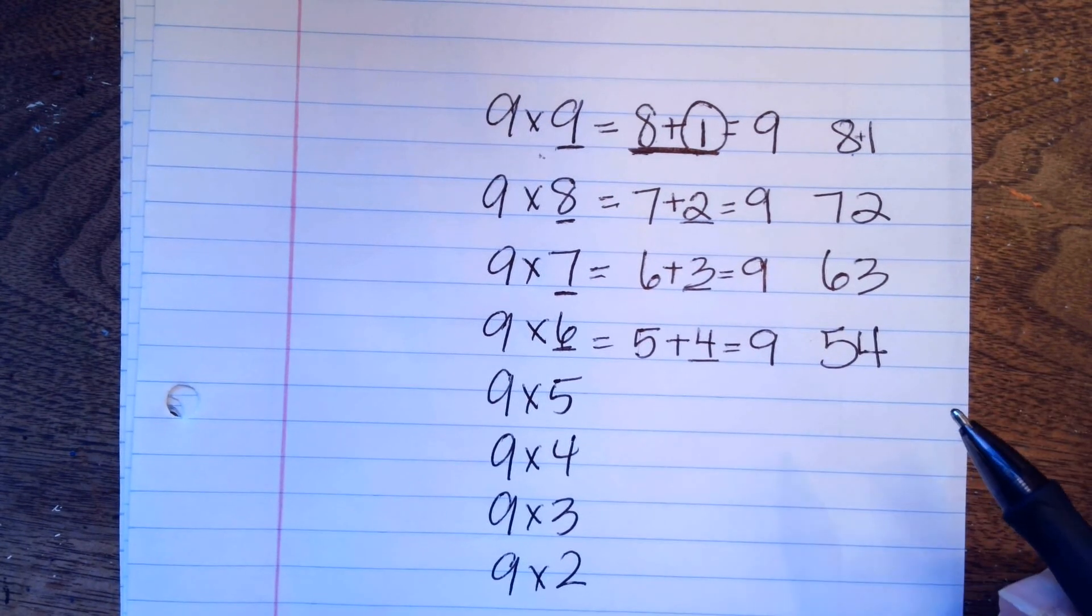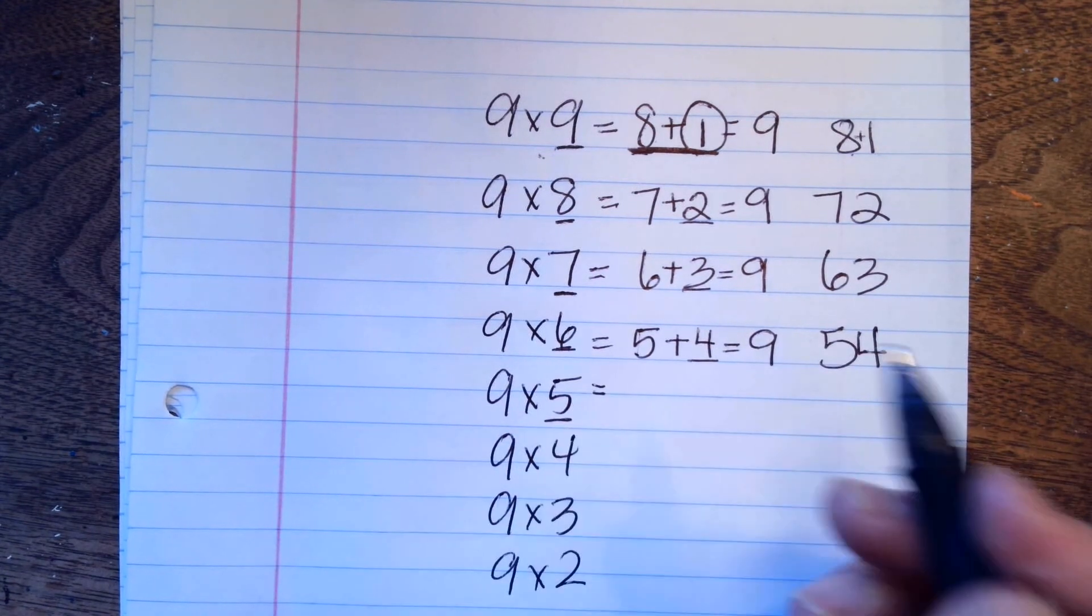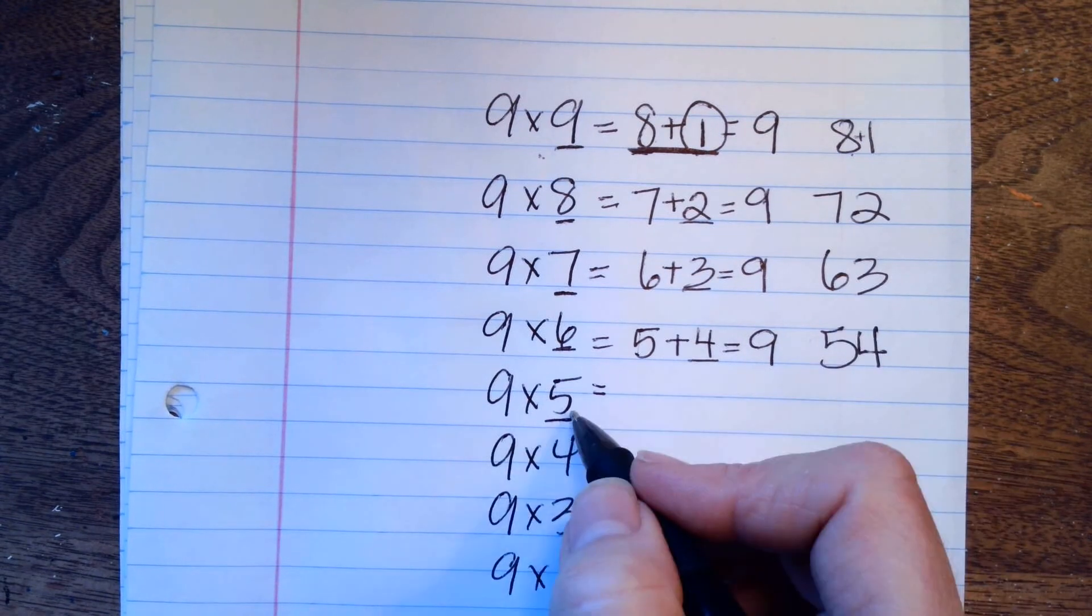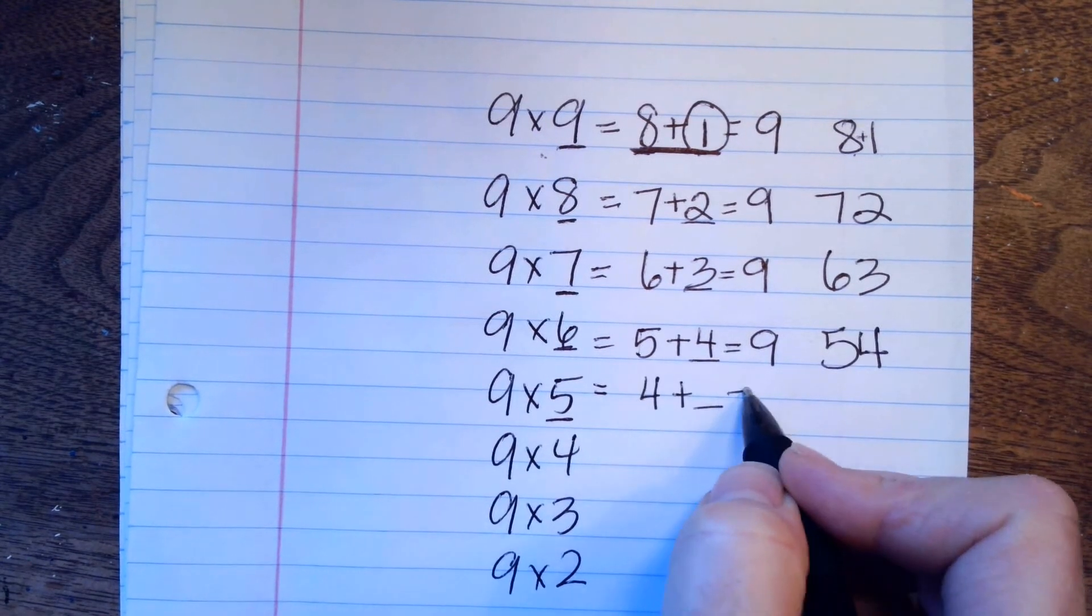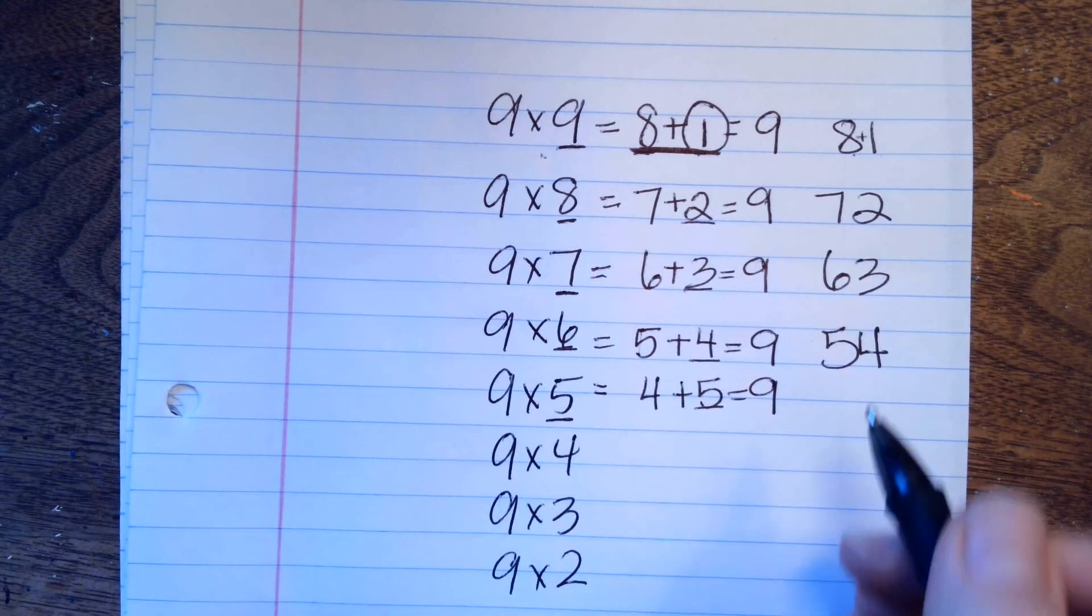Now, we're going to do the next one. Step 1, underline the number that I'm multiplying by 9. 5 minus 1 is 4. 4 plus something equals 9. 4 plus 5, 45.